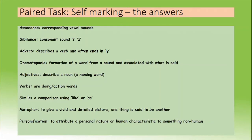An adverb — we should all know this — describes and modifies the verb, the verb being the action or doing word. They often end in LY but don't have to, and they don't have to come first. Bravely would be an adverb to describe Macbeth at the start, and then I'd like you to think of a few adverbs to describe him towards the end. Onomatopoeia is the formation of a word from a sound associated with what is said — really the primary school snap, crackle and pop that sounds like its meaning. Be tentative and careful with that one.